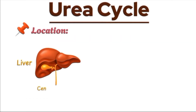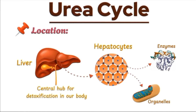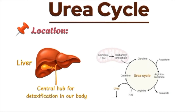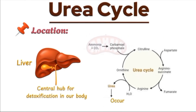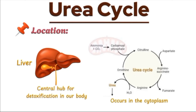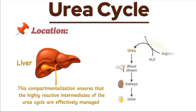The urea cycle primarily takes place in the liver, which is the central hub for detoxification in our body. The liver cells, known as hepatocytes, are specially equipped with the necessary enzymes and organelles to carry out the urea cycle efficiently. While the liver is the main site, the initial step of the urea cycle — the formation of carbamoyl phosphate — occurs in the mitochondria. The remaining steps take place in the cytoplasm. This compartmentalization ensures that the highly reactive intermediates are effectively managed and that ammonia is safely converted to urea before it is released into the bloodstream and excreted by the kidneys.